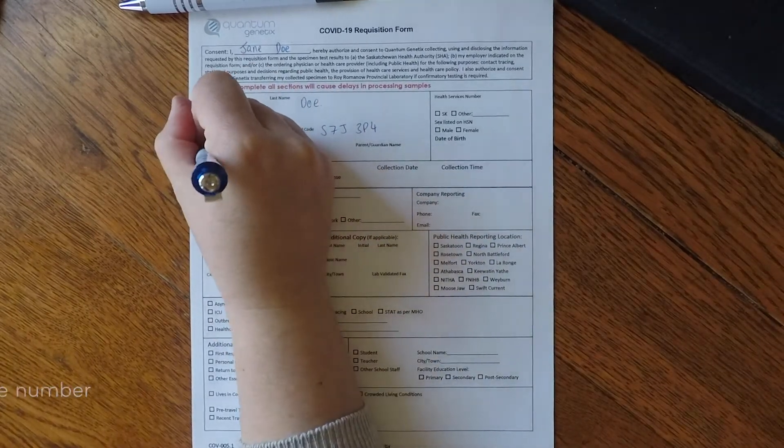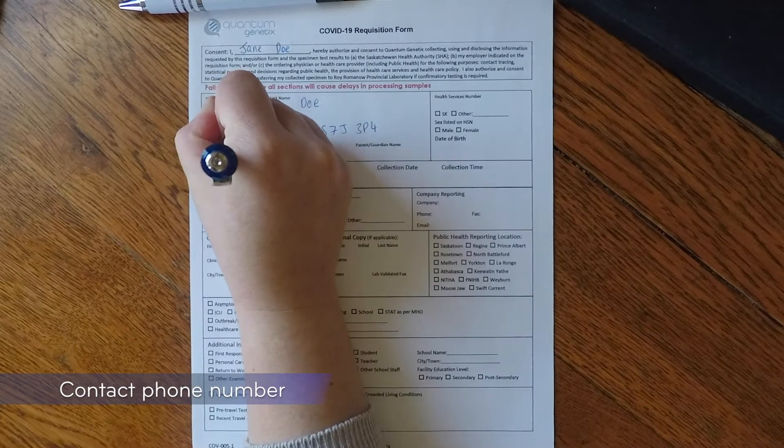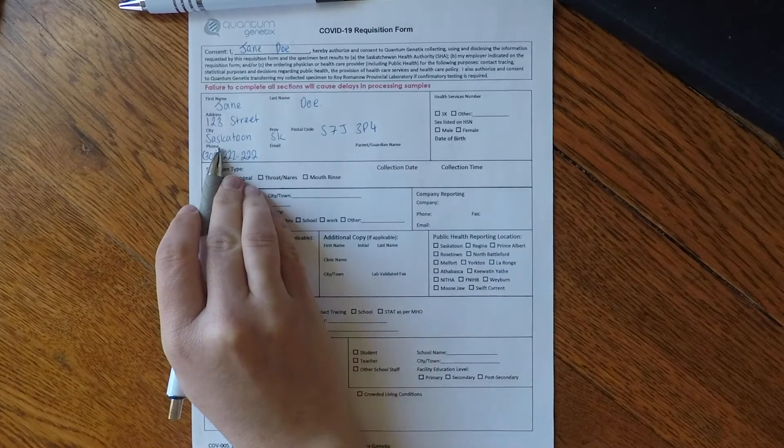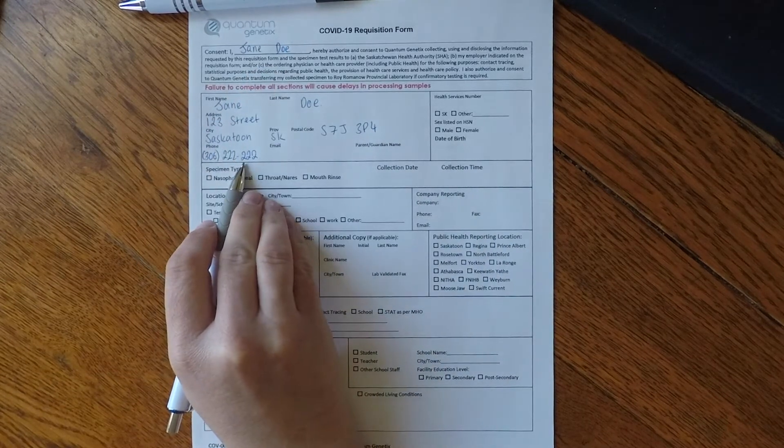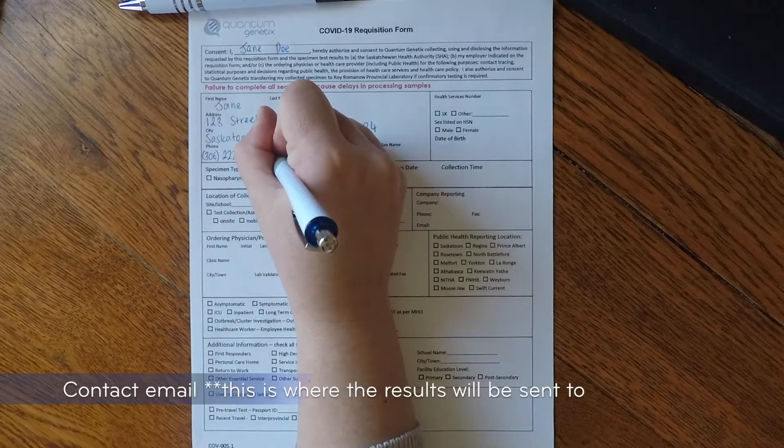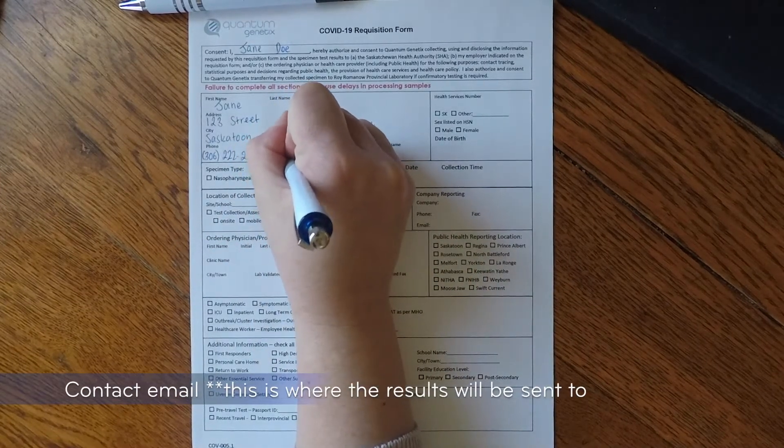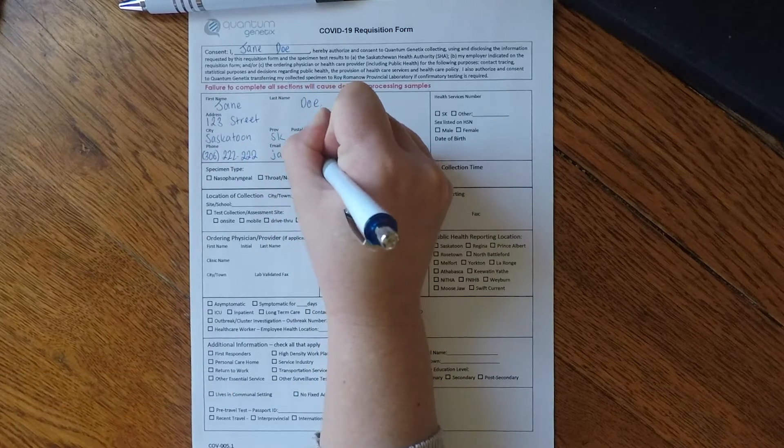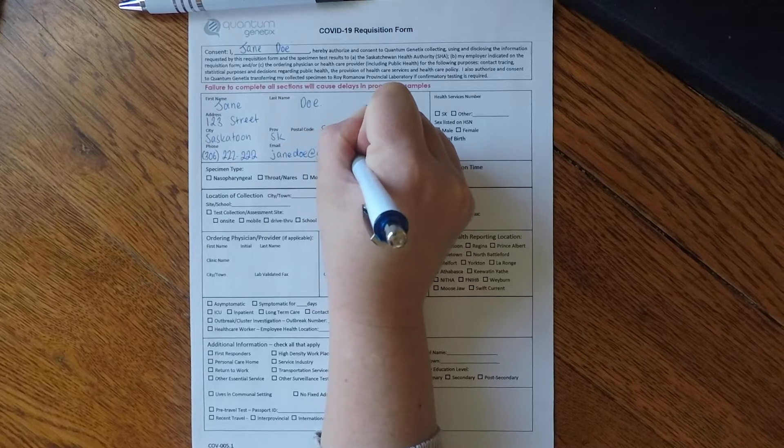Clearly write your contact phone number with area code followed by your email address. This is important as it will be the address where the results are sent to. Please ensure that your email address is printed clearly showing any underscores or full stops.